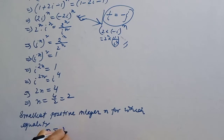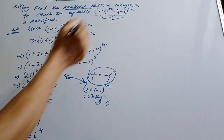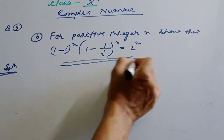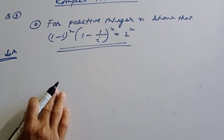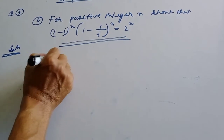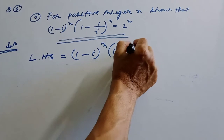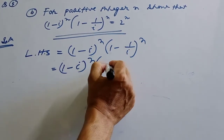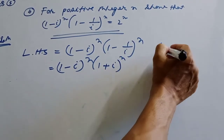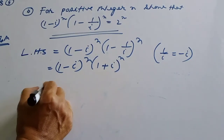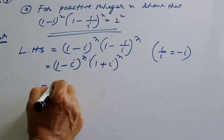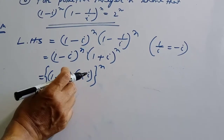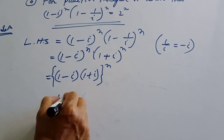The answer is n = 2. For n = 2, the condition is satisfied. Now I will prove this. For positive integer n, I will check the left-hand side: (1 - i) whole to the power n equals (1 - 1/i) whole to the power n. Since 1/i = -i, this becomes (1 + i) whole to the power n.